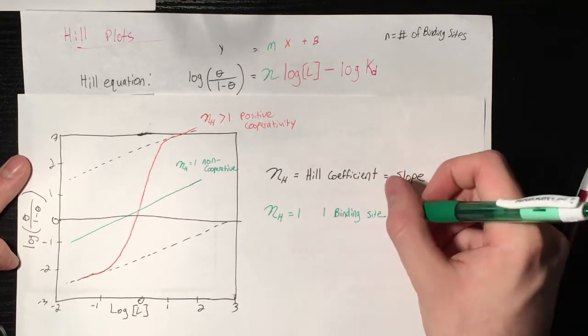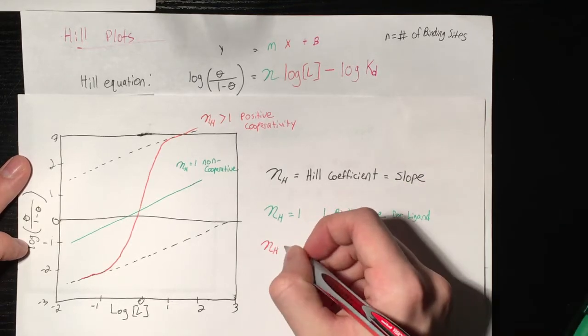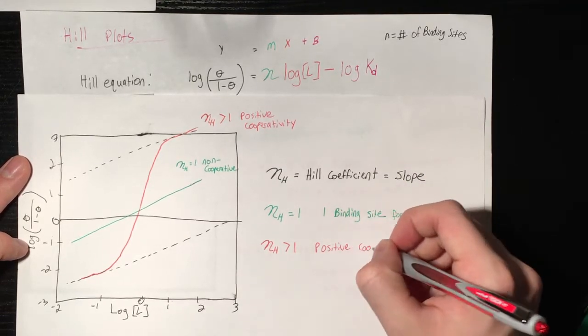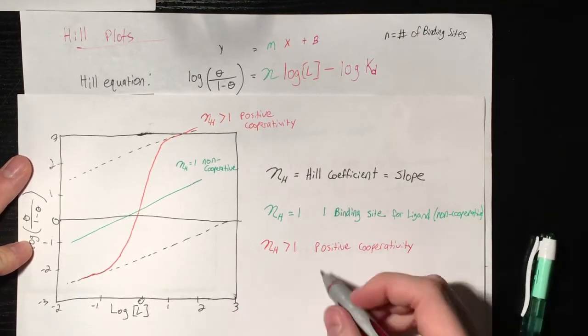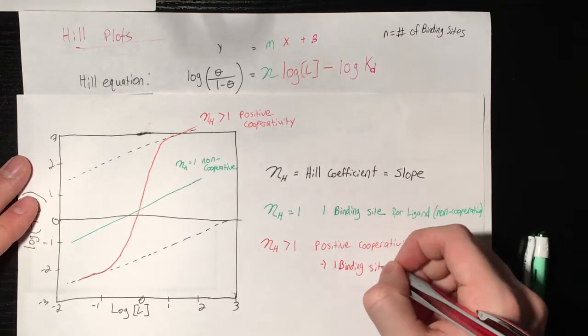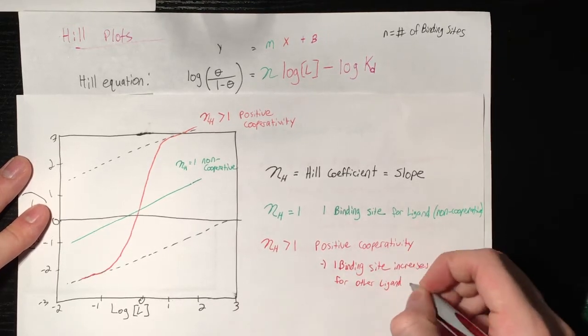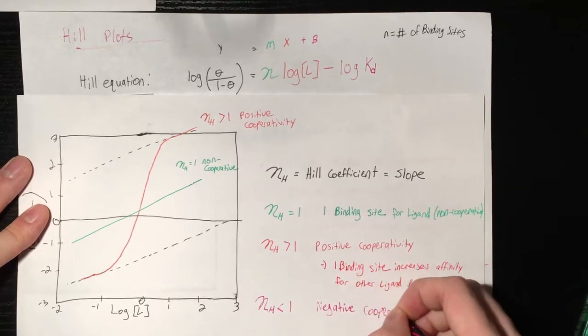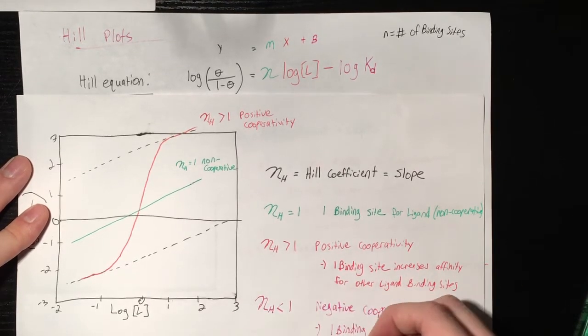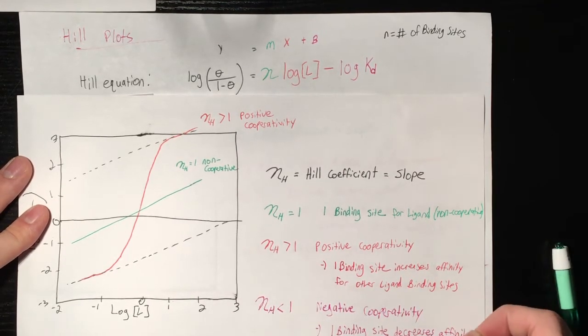And so an NH that equals 1 means there's no cooperativity between two binding sites. NH that's greater than 1 indicates positive cooperativity between binding sites, so binding to 1 will increase the affinity of the other. And your NH that's less than 1 is going to be negative cooperativity between the sites. So binding to 1 will reduce the affinity for another site.